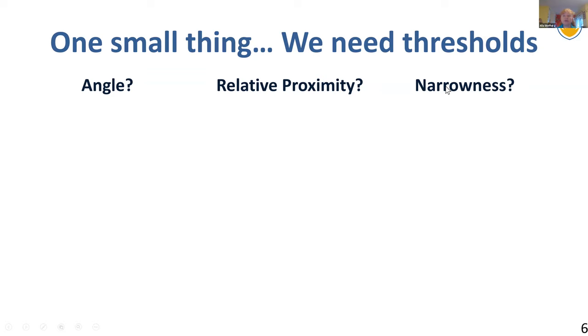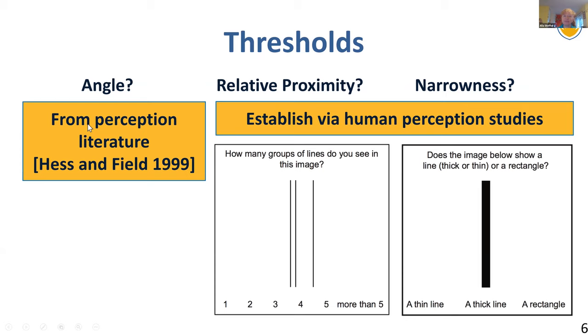There's one small thing. I mentioned that we have this notion of angle, what does it mean for relative proximity, or what does it mean to be narrow? How do we get those thresholds? Because this is thresholding algorithms literally. How do we get there?